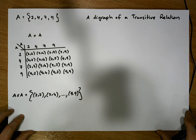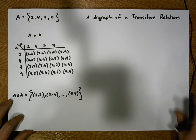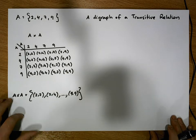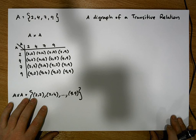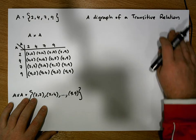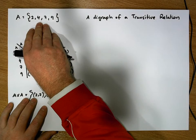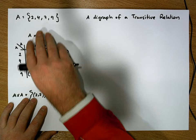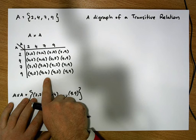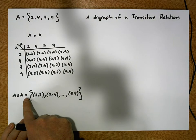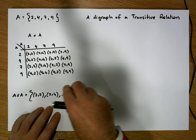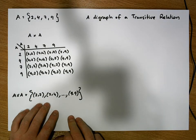Like all the previous videos in this series dealing with relations, we know that a relation is simply a subset of a cross product. More importantly, a relation is defined on a particular set. Once we have the set, we build the cross product of the set with itself, which is a set of ordered pairs, and a relation is simply any subset of that cross product.